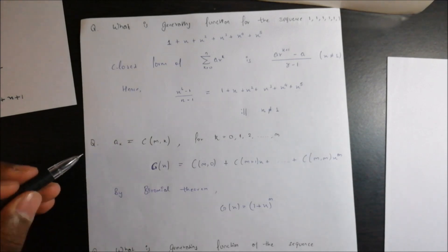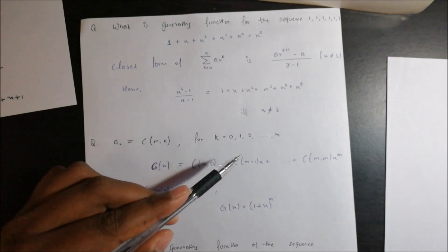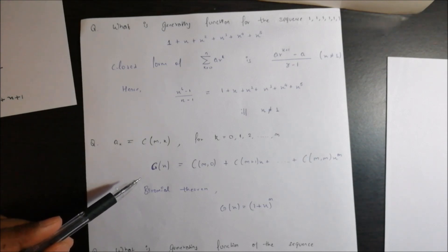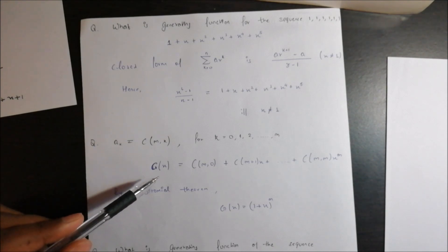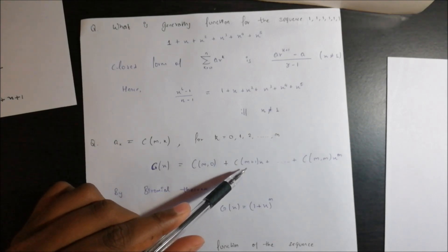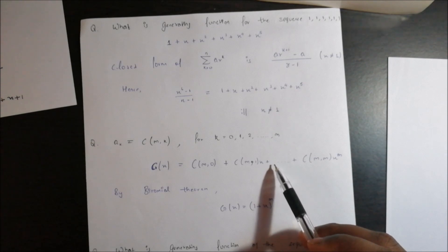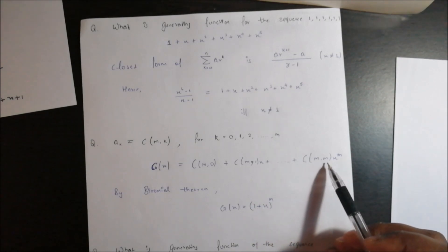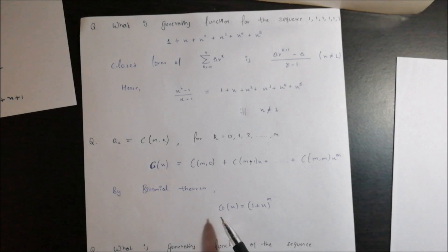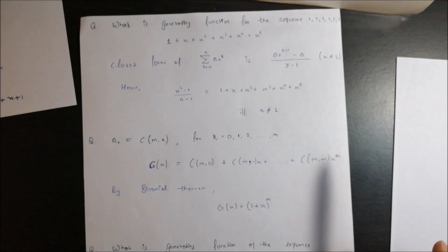The second question: if a_k equals C(m, k) for k = 0, 1, 2, ..., m, then what will be the closed form? The power series will be C(m,0) + C(m,1)·x + C(m,2)·x² + ... + C(m,m)·x^m. According to the binomial theorem, the closed form will be (1 + x)^m.